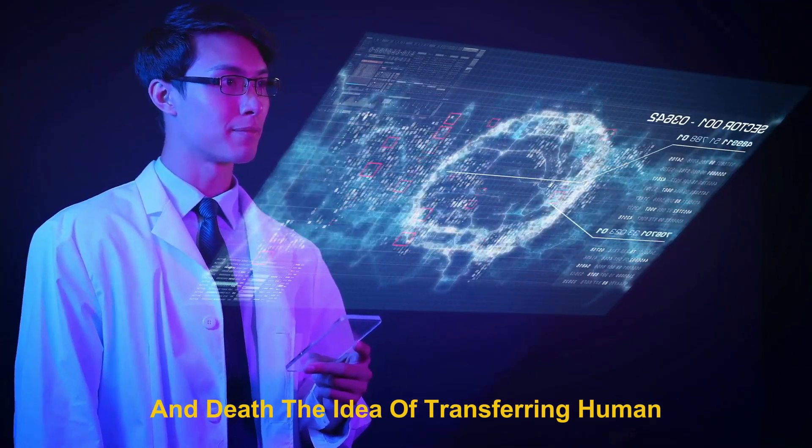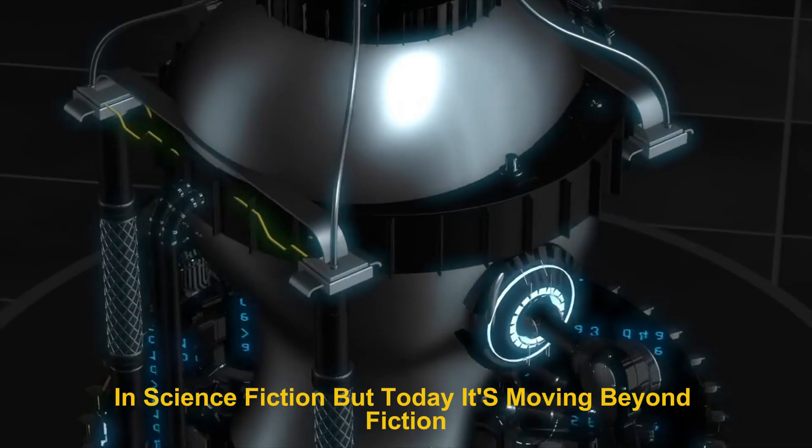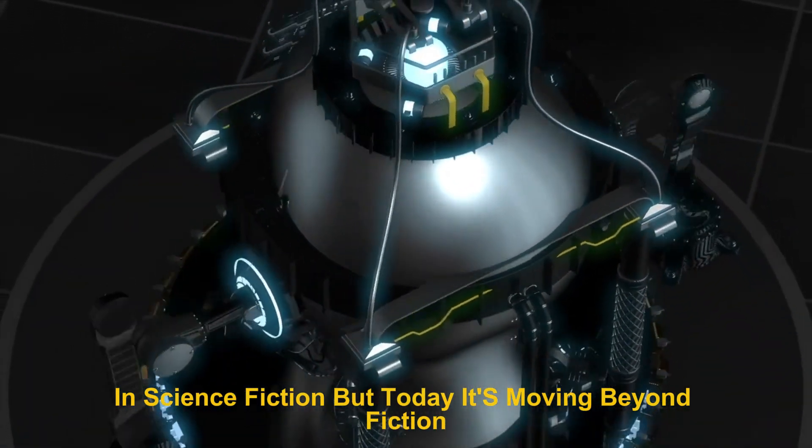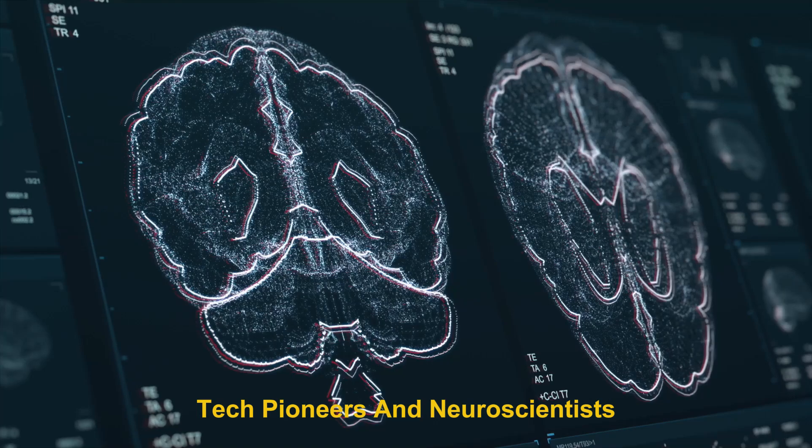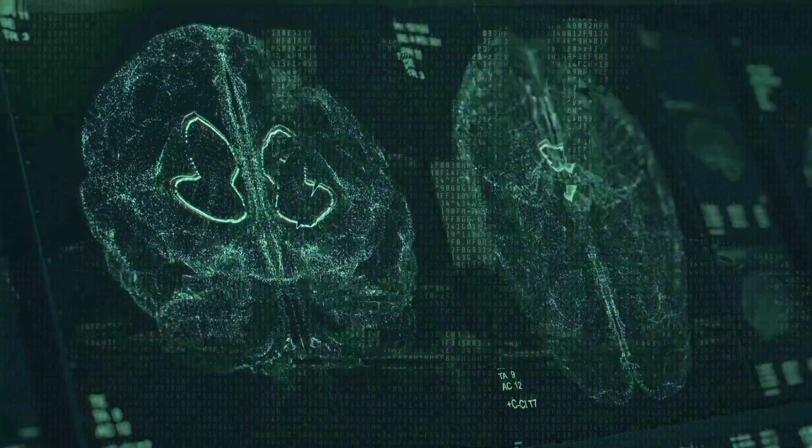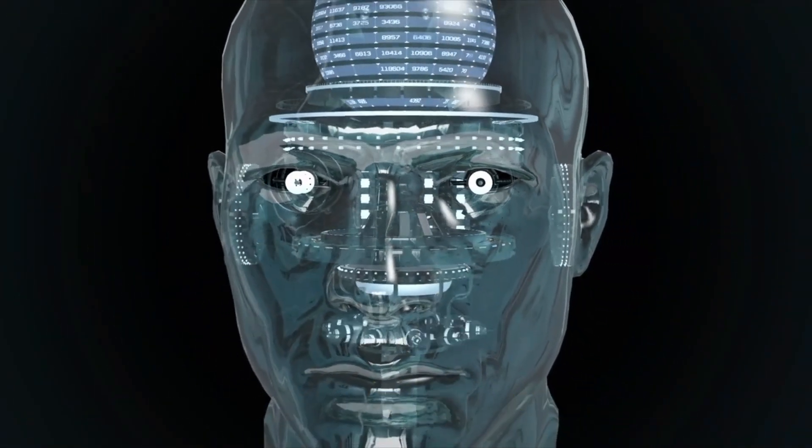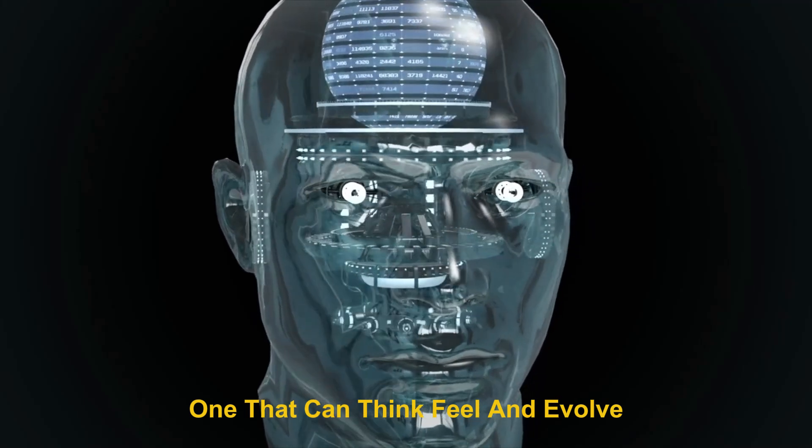The idea of transferring human consciousness into a machine has been around for decades in science fiction, but today it's moving beyond fiction. Tech pioneers and neuroscientists are developing ways to digitally copy and store human minds. The goal? To create a digital replica of a person, one that can think, feel, and evolve.